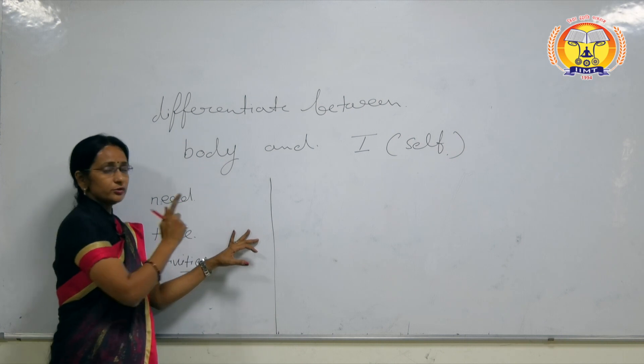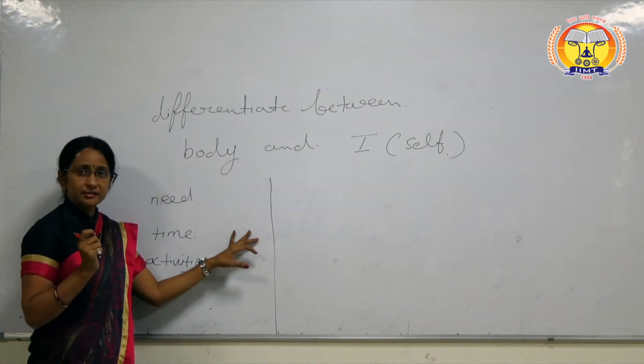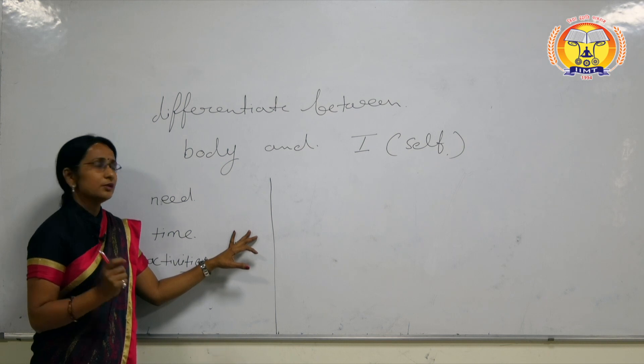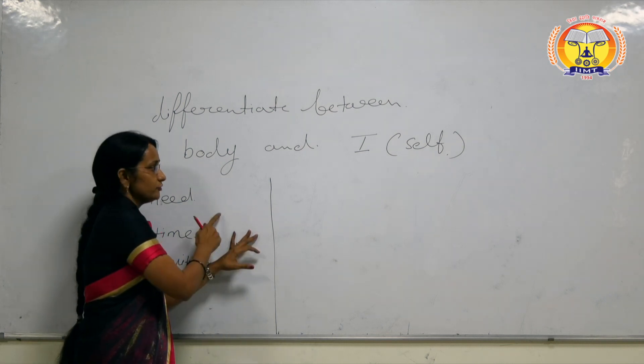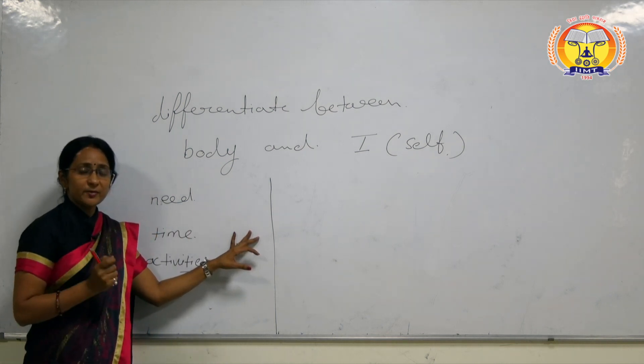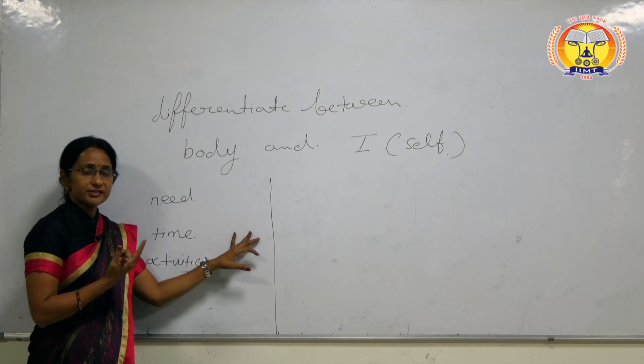The needs for body are digestion, seeing, eating, walking. The needs for self are respect, trust. These needs are for self.